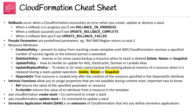The Serverless Application Model, or SAM, is an extension of CloudFormation that lets you define serverless applications. It doesn't get its own cheat sheet because there's not enough information on it at the associate level — this coverage is good enough. If you're going for the Developer Associate or DevOps Pro, the CloudFormation cheat sheet is more like six pages. Hopefully this helps you on exam day.